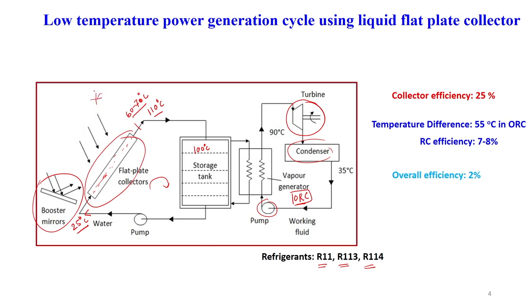Normally, the collector efficiency is about 25 percent. The temperature difference between the entry of the turbine and the condenser is about 55 degrees. If we consider this temperature difference and calculate the Rankine cycle efficiency, it is found to be about 7 to 8 percent. If we combine all those efficiencies, the overall efficiency is found to be about 2 percent. So this is not a very efficient process, but when there is a prime requirement of electricity and solar radiation is available, we can suggest this kind of technology.